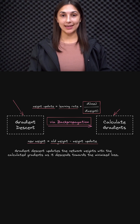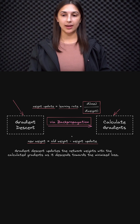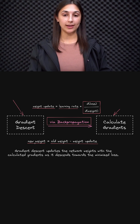For each weight in the network, we calculate the weight update value with gradient descent, and then we subtract that weight update from the old weight value. And that's going to give us our new weight value.